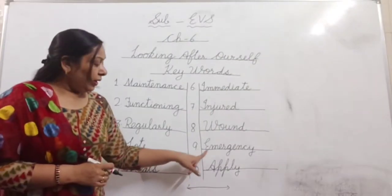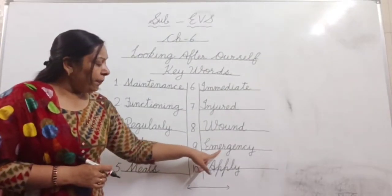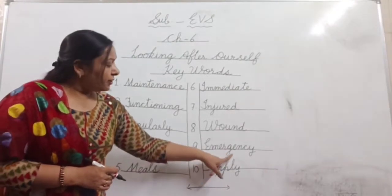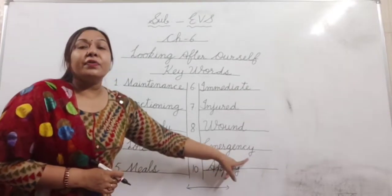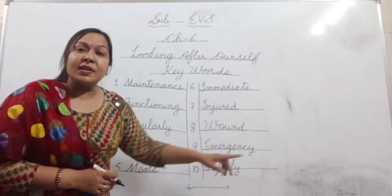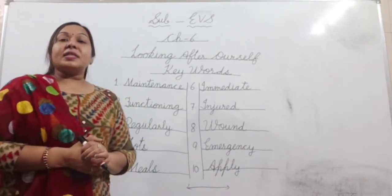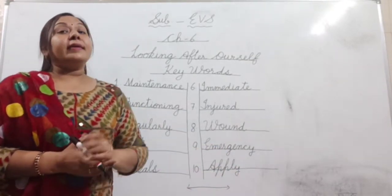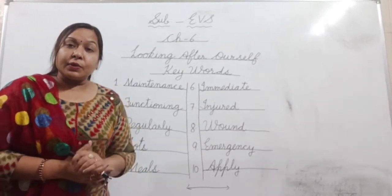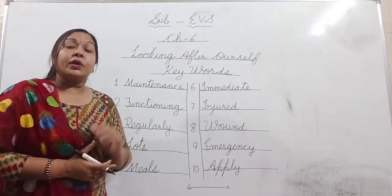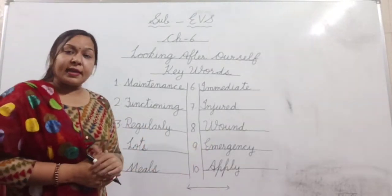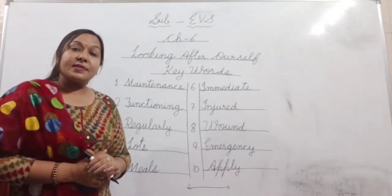Number nine: e-m-e-r-g-e-n-c-y — it's emergency. Emergency means any accident or disaster. Koi accident ho jana, durghatna ho jana. Emergency means any accident or disaster, means durghatna.